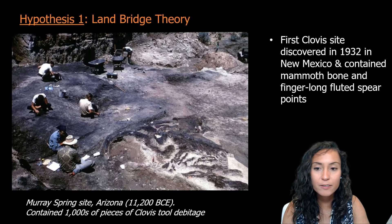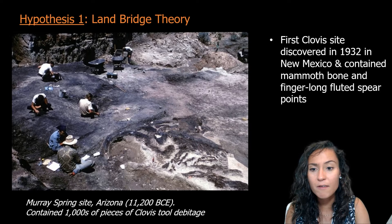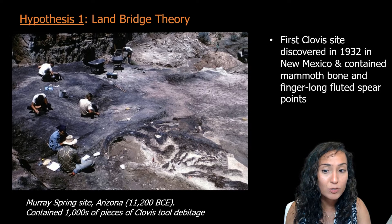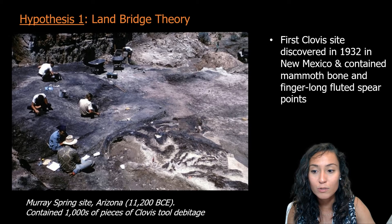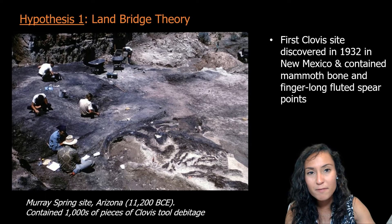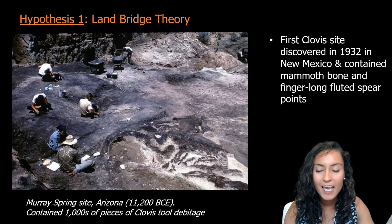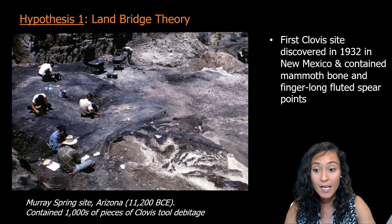One of these major Clovis kill sites is called Murray Springs, located in the San Pedro River Valley in southeast Arizona. First discovered in 1966, it dates to about 11,200 years ago. The site contained multiple bison, mammoth, and horse skeletons, along with several thousand stone tools and waste flakes. There is also a hunter's camp about 50 meters away from the kill area. Excavations revealed artifactual evidence of hide working and weapon repair, making this the most significant Clovis stone tool manufacture site in the entire southwestern United States.